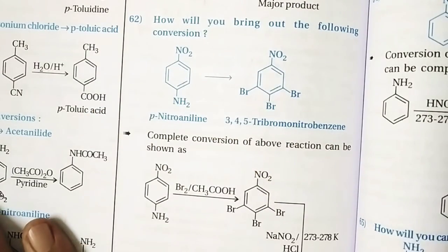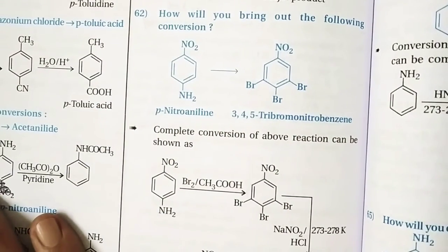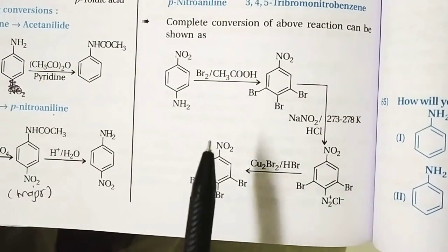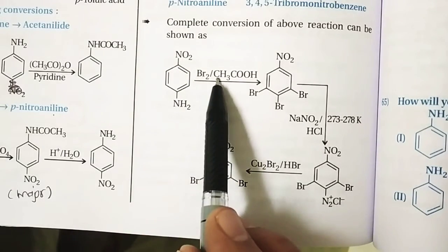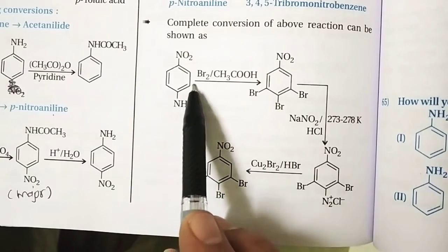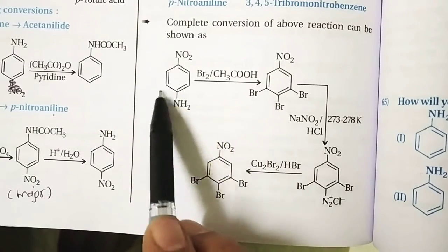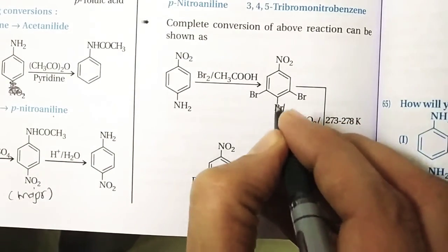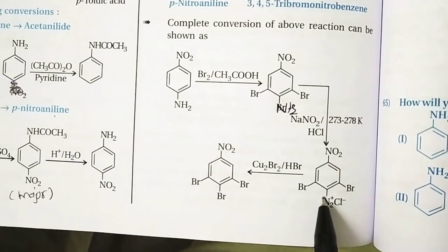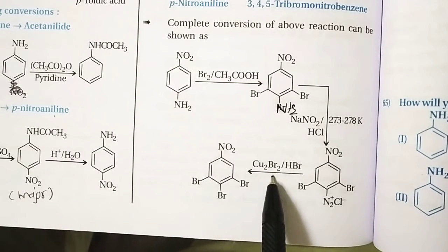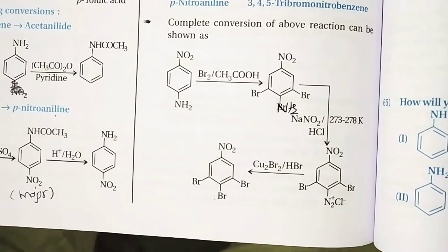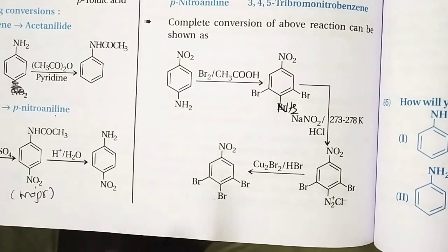Question 62: How will you carry out the following conversion? Starting from paranitroaniline, first carry out nuclear bromination — bromine is introduced at the two positions ortho to NH2. Then diazotization converts NH2 to N2Cl, followed by the Sandmeyer reaction to replace N2Cl with bromine, giving 3,4,5-tribromonitrobenzene.